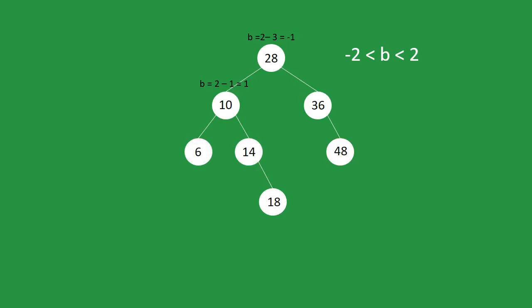But sometimes, when we add or delete a node, the tree becomes unbalanced. For example, if I delete 48, the root balance factor would be minus 2. So we need some tools to renew the balance, and these tools are called rotations.